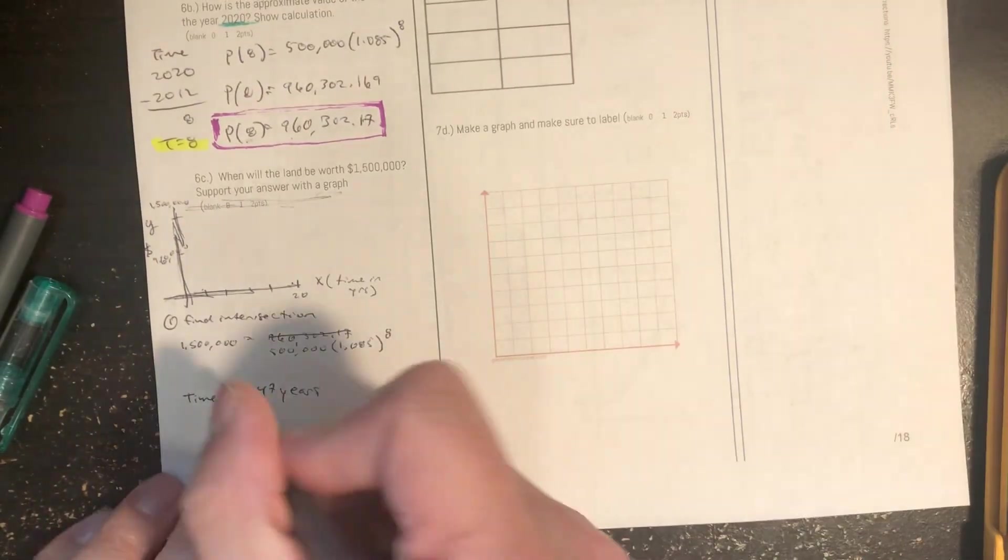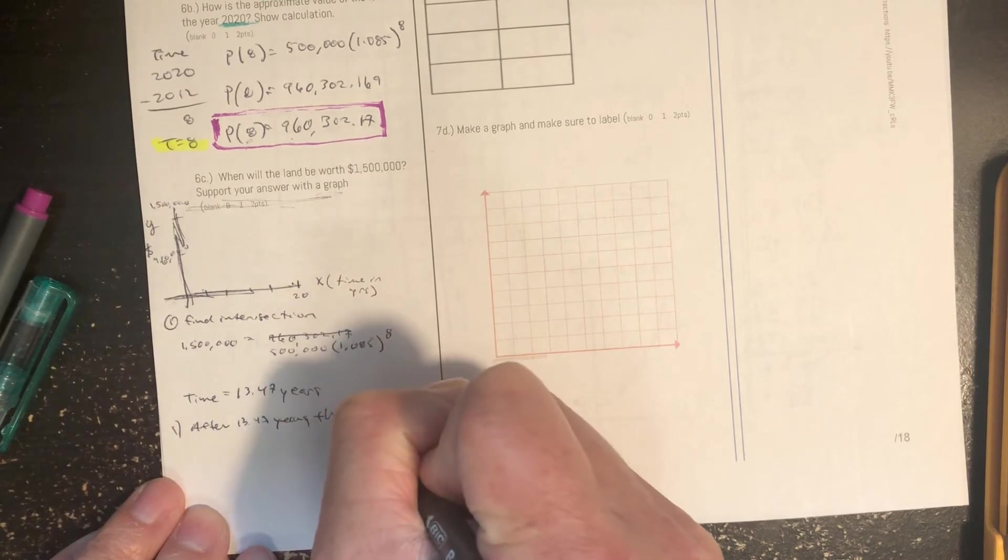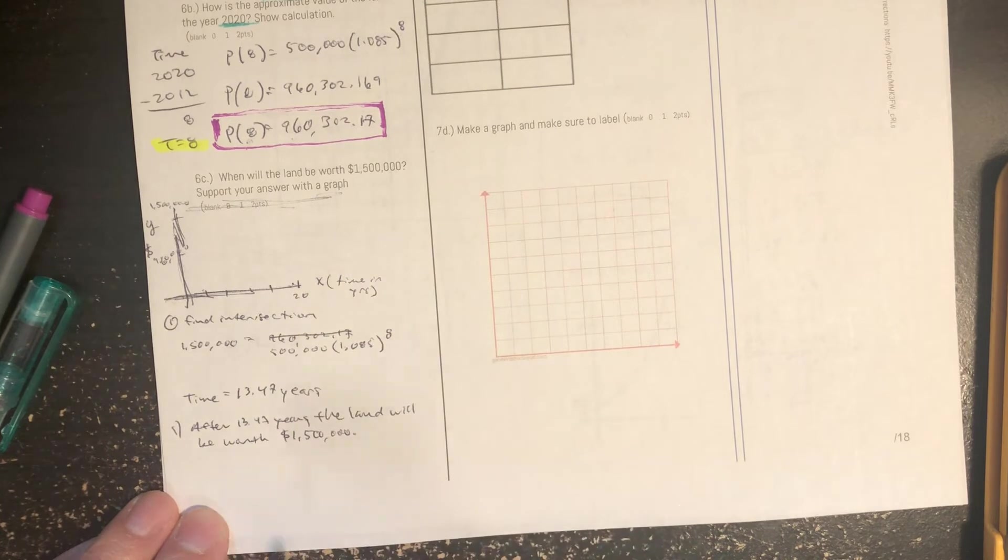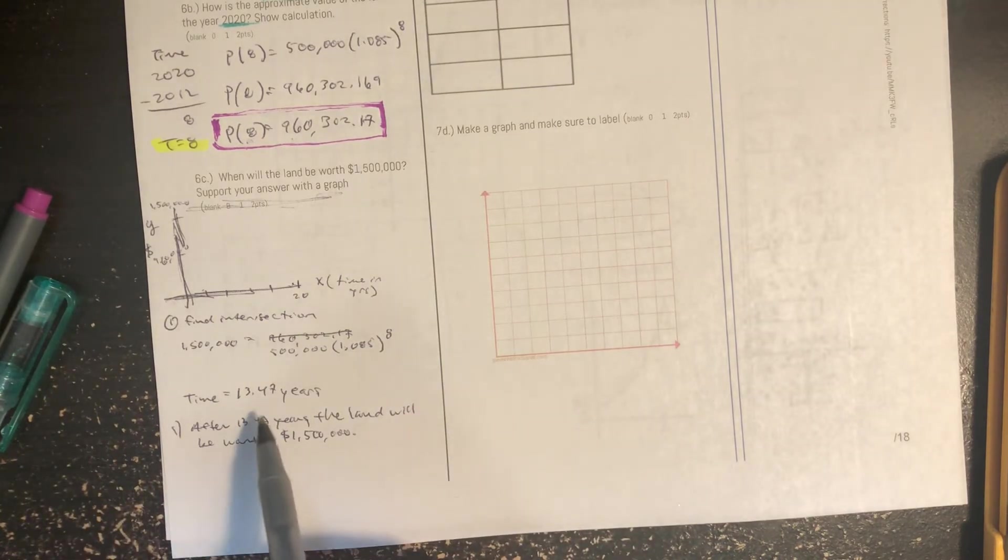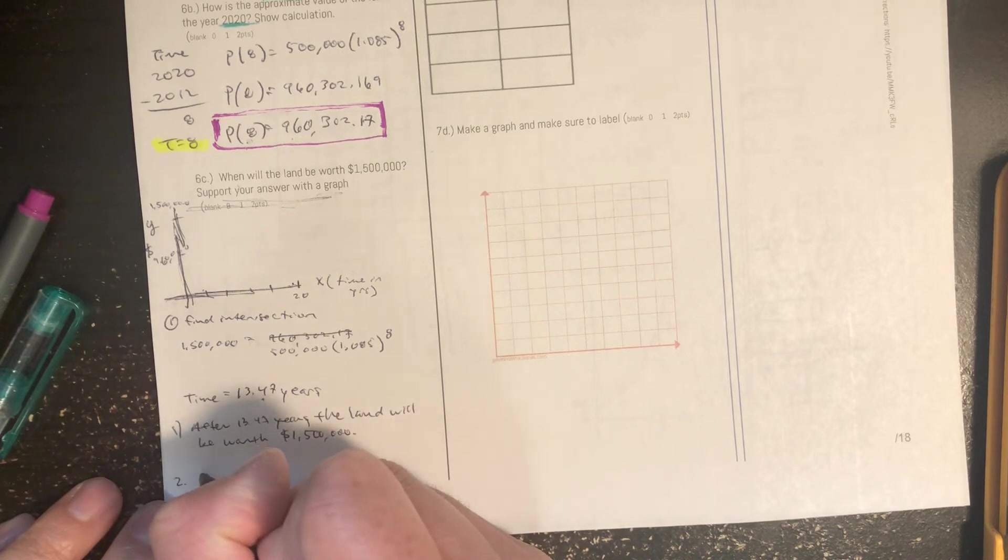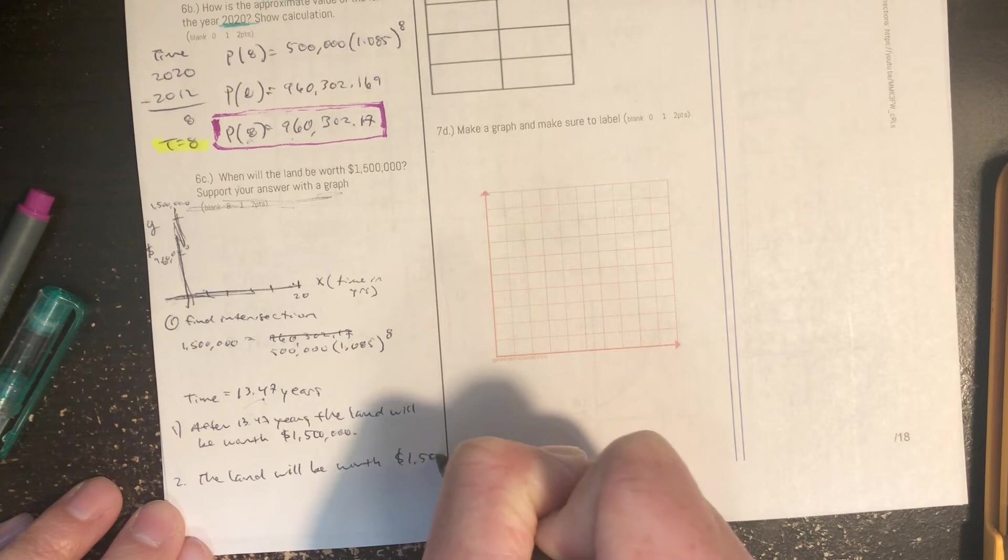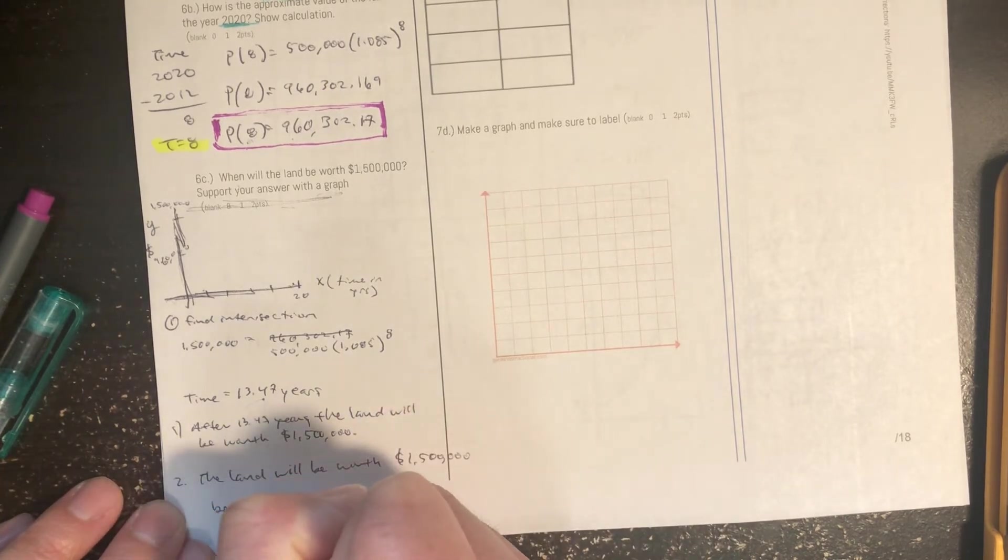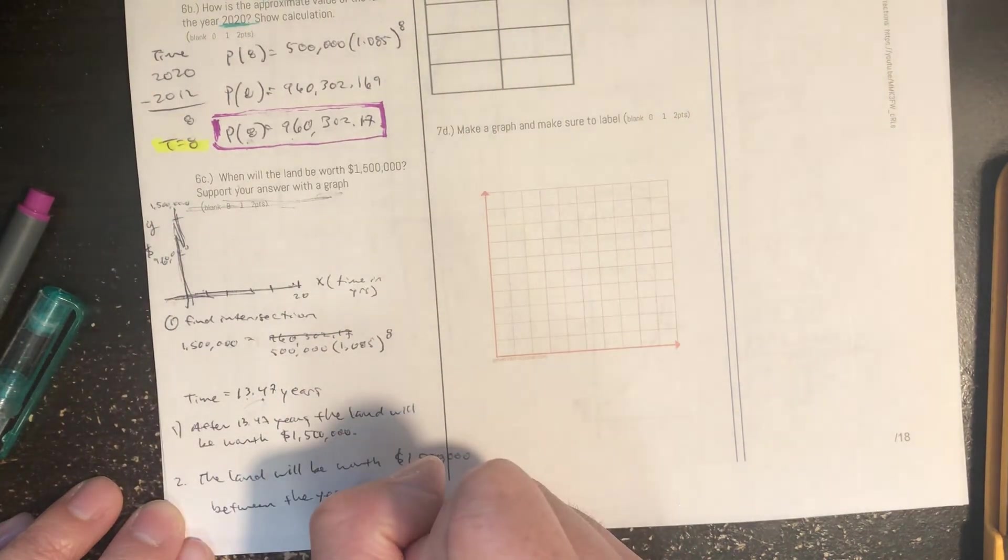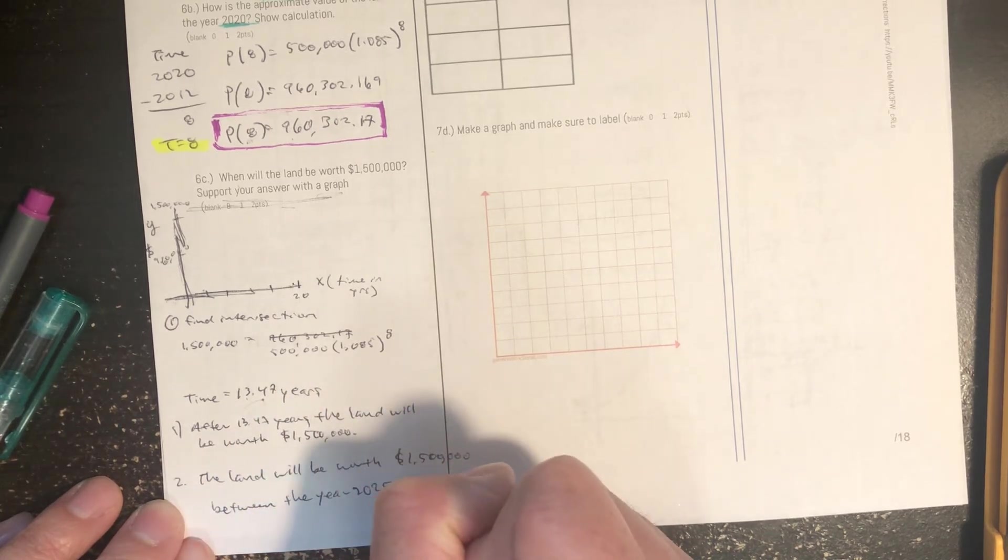And it gives me a time of approximately 13.47 years. So there's a couple of things you can say. You can say after 13.47 years, the land will be worth $1,500,000. Or you can say between, so 13.47 plus 2012 gives me 2025 and 2026.